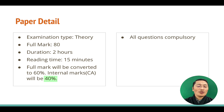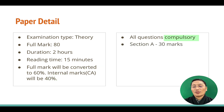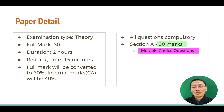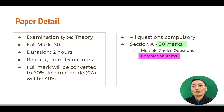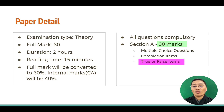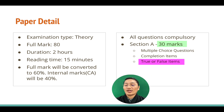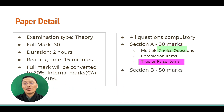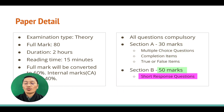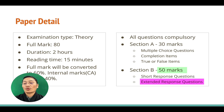Coming to the paper, all the questions within the theory paper are compulsory. Section A will be out of 30 marks and will include multiple choice questions, completion questions (fill in the blanks), and true or false items. Section B is out of 50 marks and contains short response questions and extended response questions.